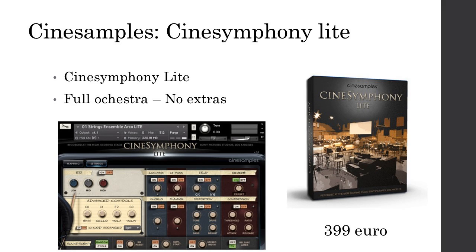Then there's CineSamples, also known for really good quality. They have one bundle with the full orchestra: CineSymphony Lite. What you get is your full orchestra — strings long and short, brass long and short, woodwinds long and short, percussion, timpani, and pizzicato strings. That's it — no extras, no choir, no piano, no special effects, no pads. Content-wise it's a little less, but quality-wise it's definitely a good one. It's also lightweight at only 2 gigabytes total.